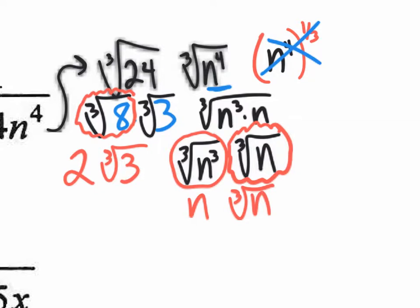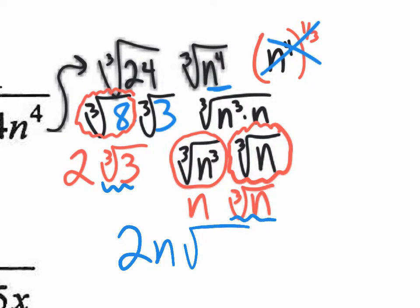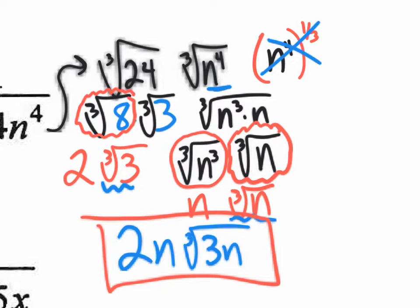My answers are the 2 and the n — the nice numbers go first — and inside the radical I put the 3 and the n together. Don't forget to include the little 3 to show it's a cube root, otherwise it looks like a square root. The final answer is 2n times the cube root of 3n.